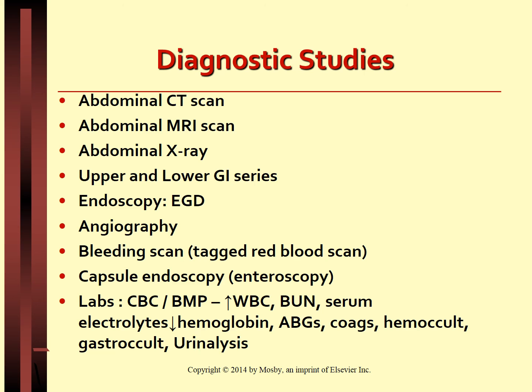Lab studies include CBC, CMP, BUN, serum electrolytes, and coagulation studies including PTT, INR, hemoglobin, and hematocrit. ABGs may also be measured, along with typing and crossmatching for possible blood transfusions. The initial hematocrit may be normal and may not reflect blood loss until 4 to 6 hours after fluid replacement, because initially plasma and RBC losses are equal. During significant hemorrhage, blood proteins broken down by GI tract bacteria result in elevated BUN levels. Urinalysis and urine specific gravity may indicate hydration status.